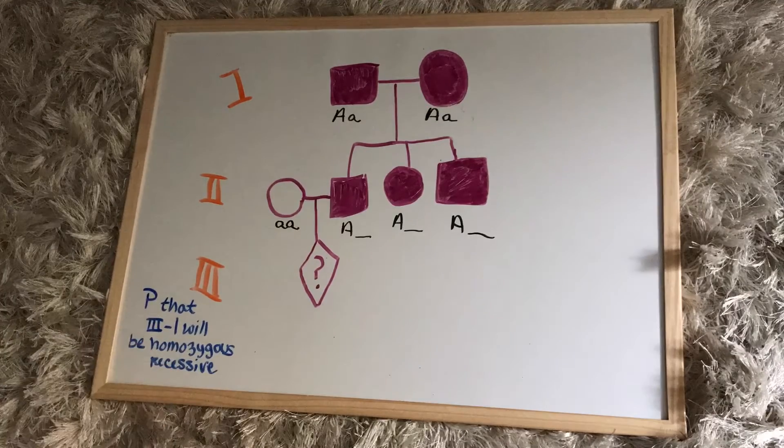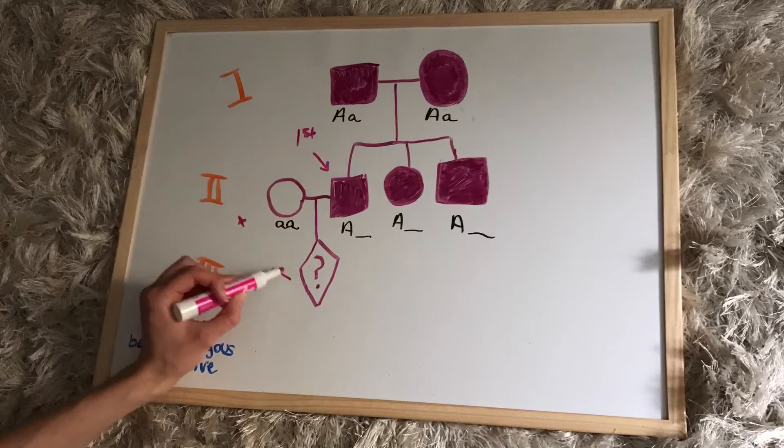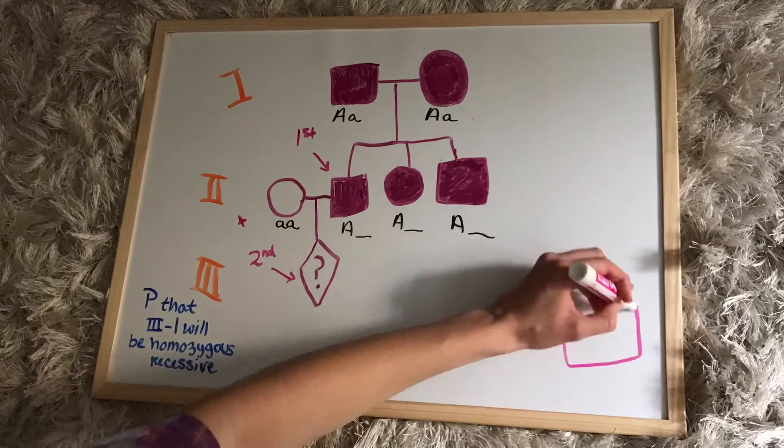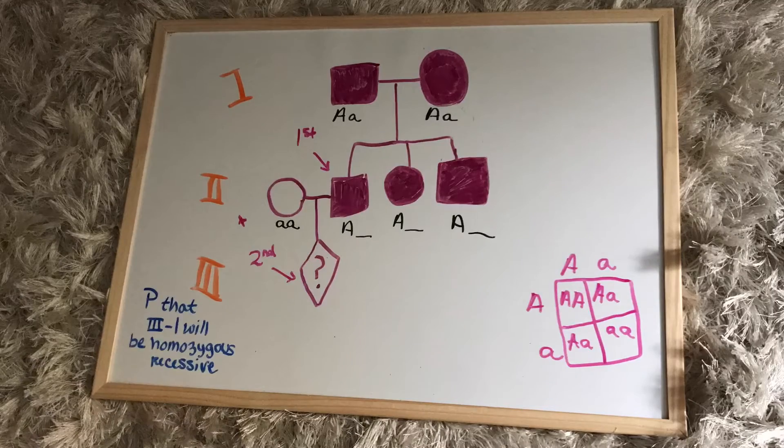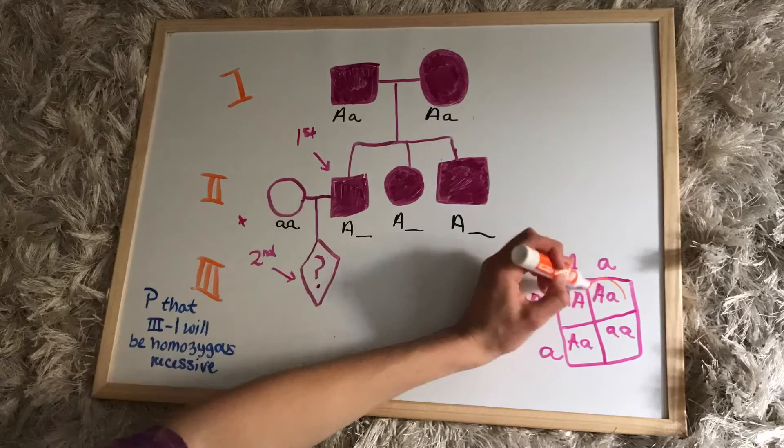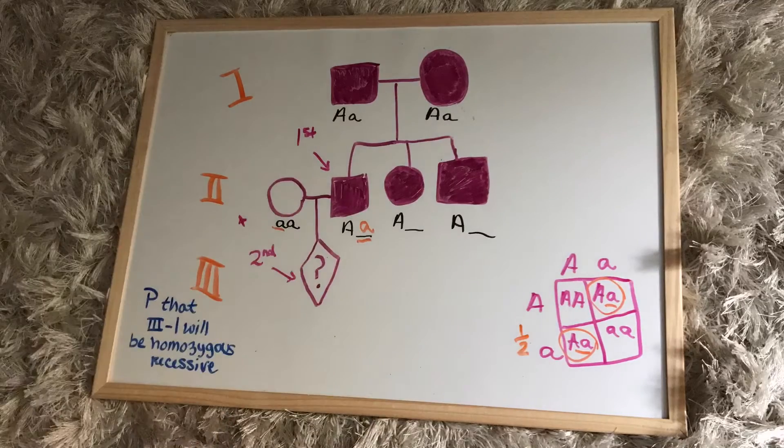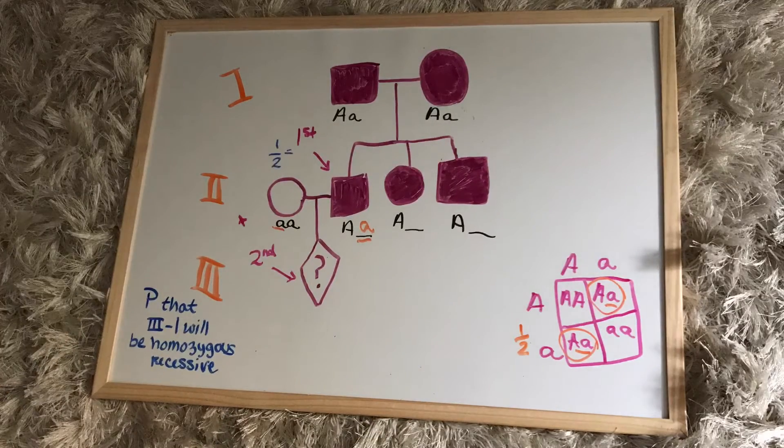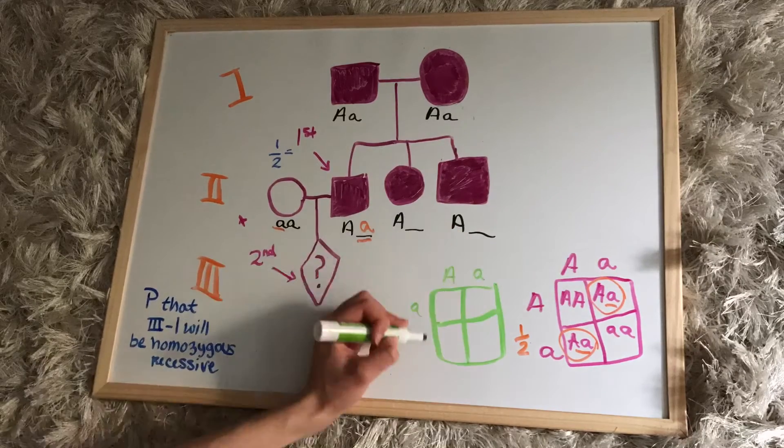Since this is another two-part problem, our first Punnett square will be the probability that its father is heterozygous, because that's the only way the child could be homozygous recessive, and then we'll do a second Punnett square. So the first one is with the parents in generation one, and we find out the probability that the father is heterozygous is one-half.